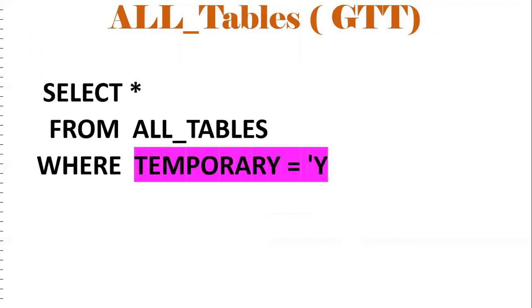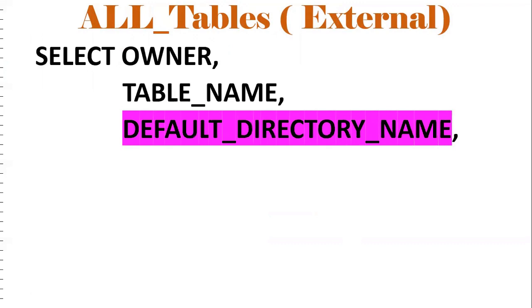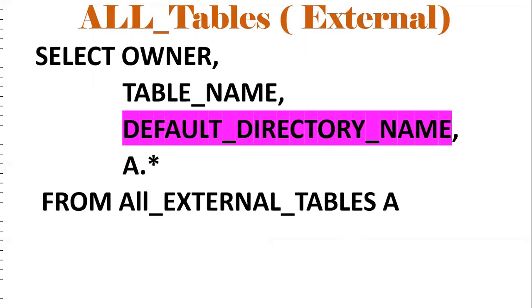To find Global Temporary Tables, use: SELECT * FROM ALL_TABLES WHERE TEMPORARY = 'Y'. For external tables, use ALL_EXTERNAL_TABLES, which provides owner, table name, and default directory name, so you can figure out what external tables are available in the database.